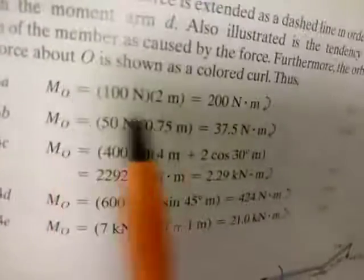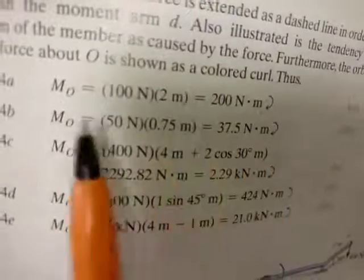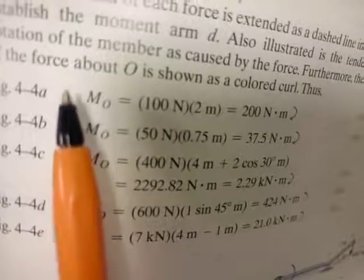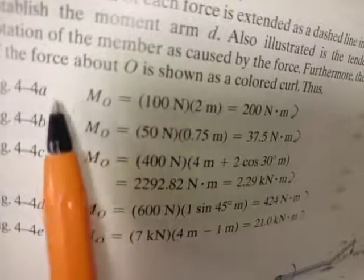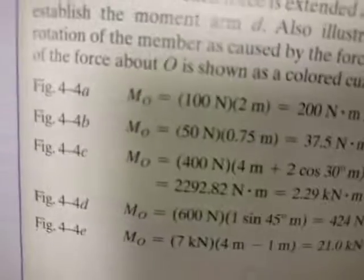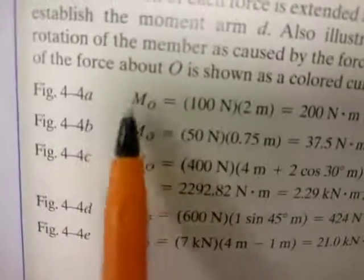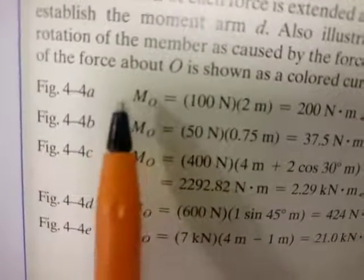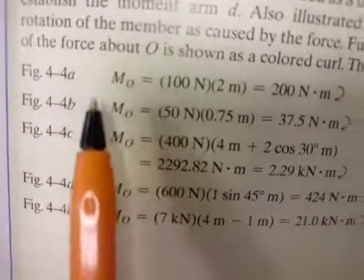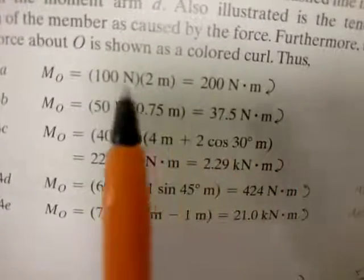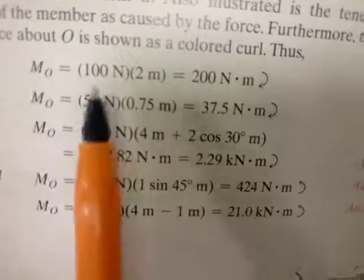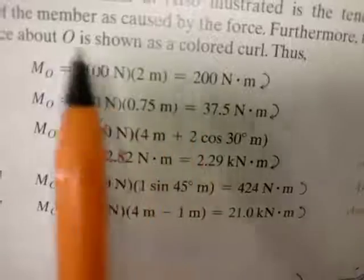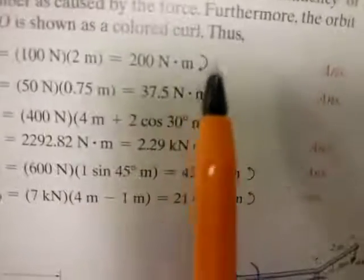The reason they haven't written it as −200 yet is because they haven't defined counterclockwise as positive. All they're doing here is the very basics — simply calculating the magnitude and giving it a direction.